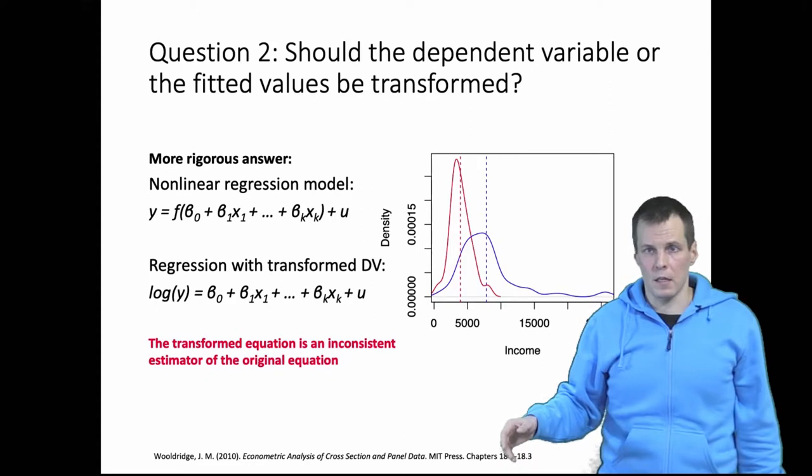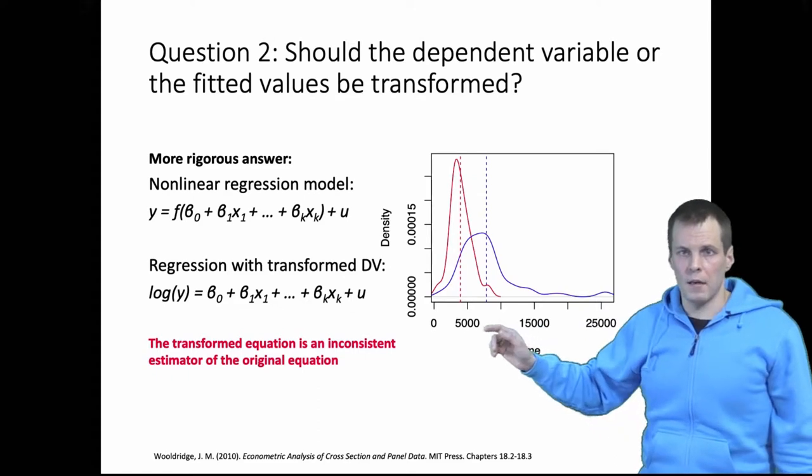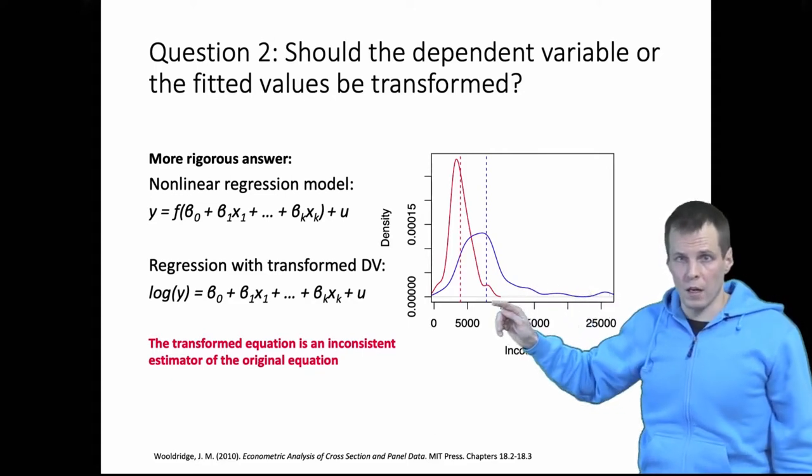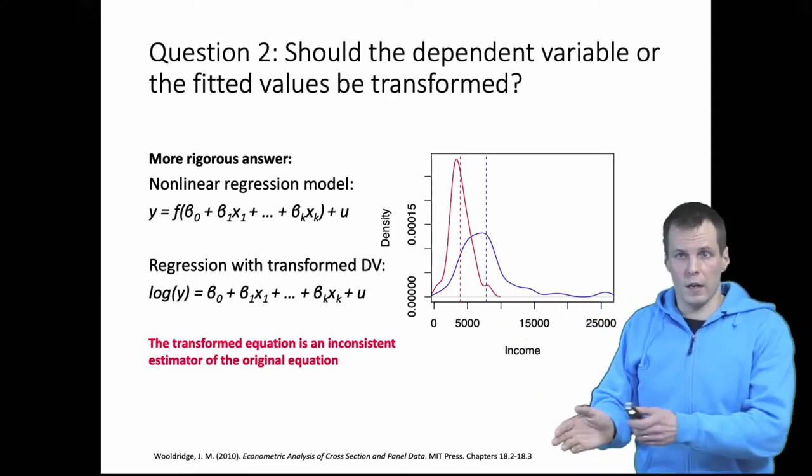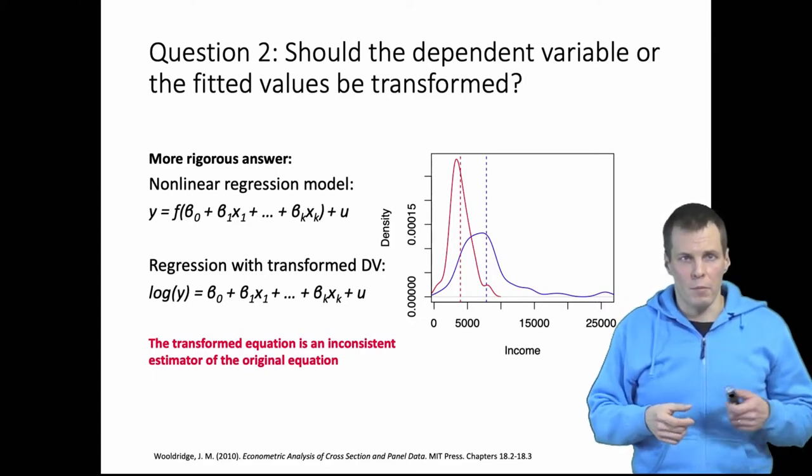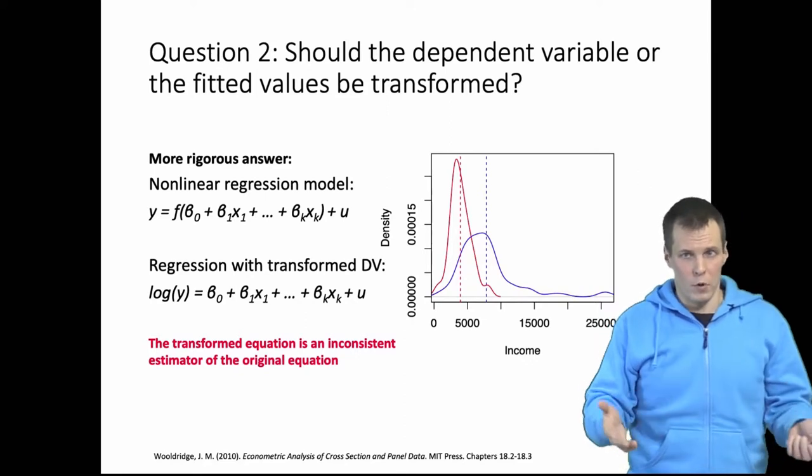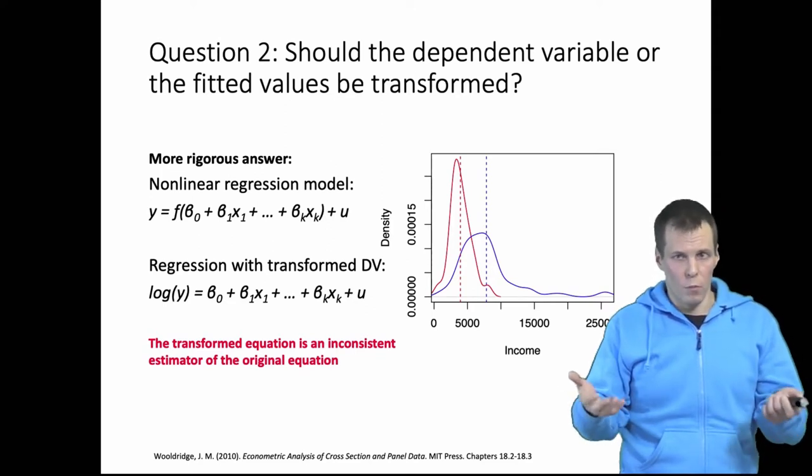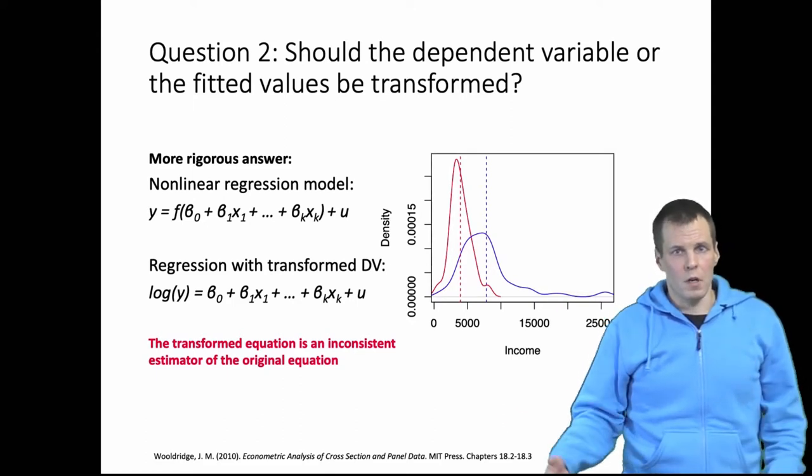So I have this data set here. This is the prestige data set that I've used before and we have the distribution of income for professions that are more than half men and distribution of income for professions that are more than half women. So we have men-dominated and women-dominated professions and we are interested in knowing whether men-dominated professions make more money than women-dominated professions. This is something that we would typically want to answer with men make 20% more or 50% more instead of saying that men make 4,000 Canadian dollars more because the percentage is something that we typically think in this kind of comparisons.